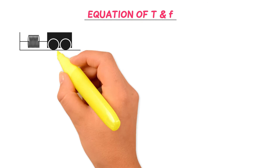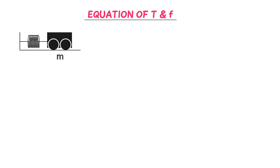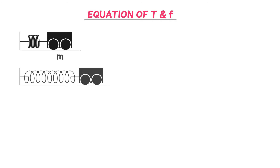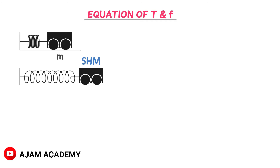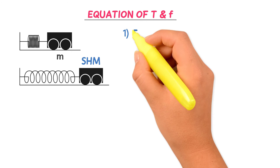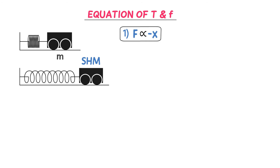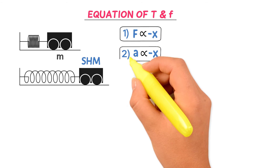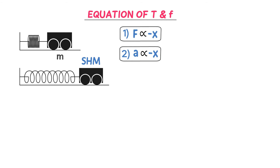Now let me derive the equation of time period and frequency. Consider a mass M attached to an elastic spring. We learned in the previous video that displacing this mass from the mean position to the extreme position causes it to perform SHM. Two important properties of SHM: firstly, the restoring force is always directly proportional to the displacement from the mean position and opposite in direction.